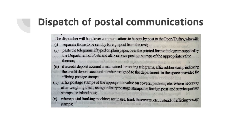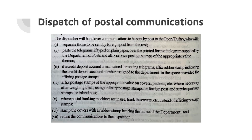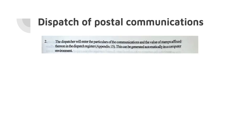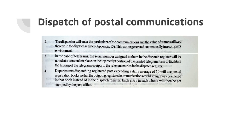Where postal franking machines are in use, frank the covers instead of affixing postage stamps. Stamp the covers with a rubber stamp bearing the name of the department and return the communications to the dispatcher. The dispatcher will enter the particulars of the communications and the value of stamps affixed thereon in the dispatch register as mentioned in Appendix 15 of the Manual of Office Procedures. This can be generated automatically in a computer environment. In the case of telegrams, the serial number assigned to them in the dispatch register will be noted on the top receipt portion of the printed telegram form to facilitate linking of telegram receipts to relevant entries in the dispatch register.